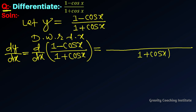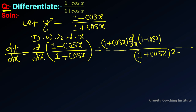1 plus cos x whole square में: 1 plus cos x into derivative of 1 minus cos x, minus 1 minus cos x into derivative of 1 plus cos x.